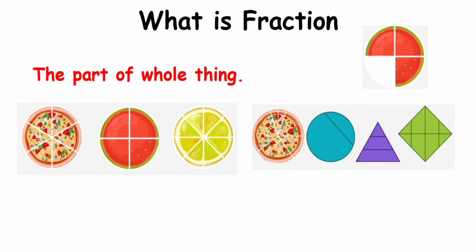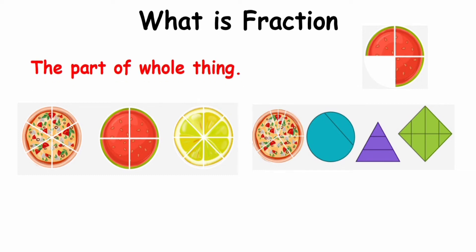For example, here I have a pizza. You might have bought a pizza before. The pizza maker divides the pizza into equal parts. In fractions, the parts have to be equal — it's not like one part is greater than another. So this is my whole pizza, and I have divided it into one, two, three, four, five, six — six equal parts.